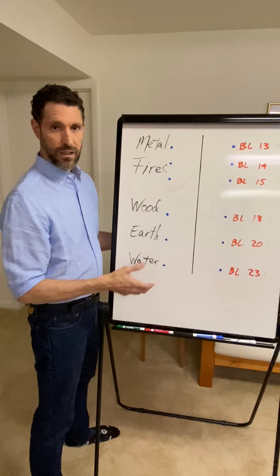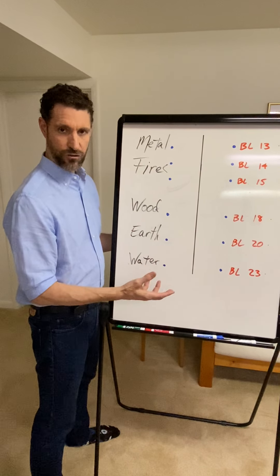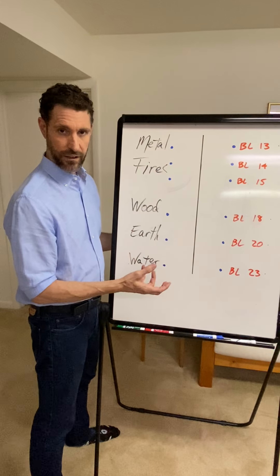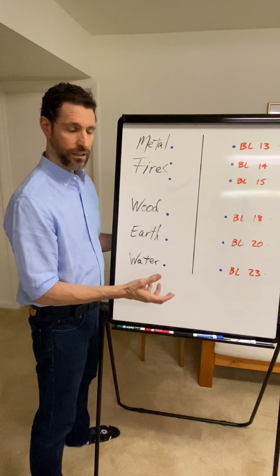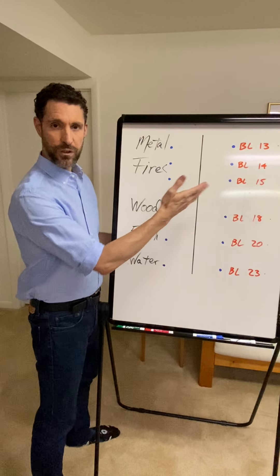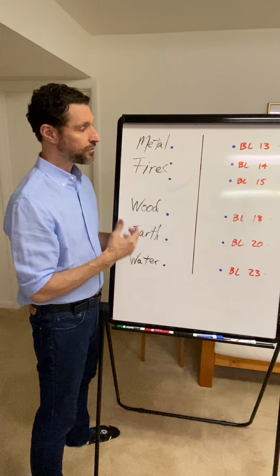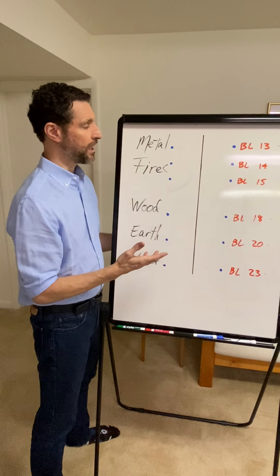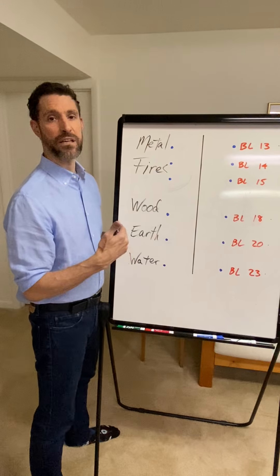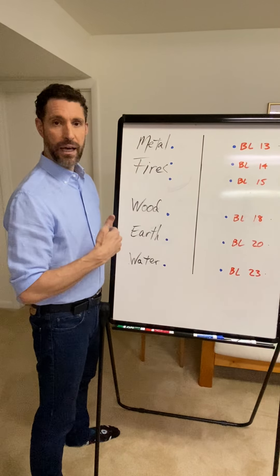As these points are on the back and specifically on the bladder channel, they are said to transport the yang essence Qi — the yang aspects of the Jing essence — created from Ming Men and distributed up to these points via the bladder channel. So these are profoundly effective points for yin problems such as deficiencies.